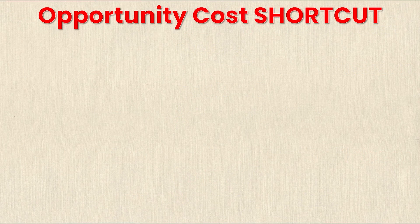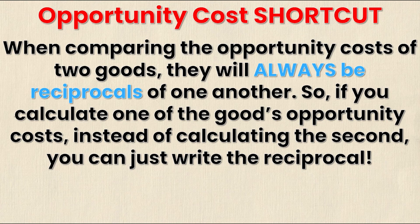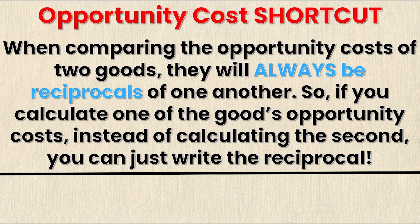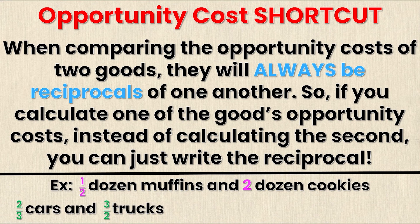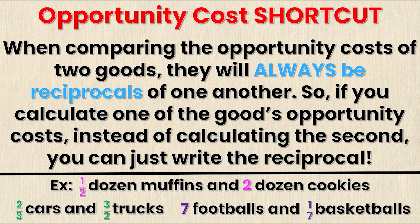Here's an opportunity cost shortcut useful if you're facing a time crunch on a test: when comparing the opportunity costs of two goods, they will always be reciprocals of one another. So if you calculate one good's opportunity cost, you can just write the reciprocal for the other. In our example, one half dozen muffins and two dozen cookies are reciprocals — flip one half over and you get two. Another example: if the opportunity cost of trucks is two over three cars, the opportunity cost of a car is three over two trucks. Or seven footballs and one over seven basketballs — always reciprocals.